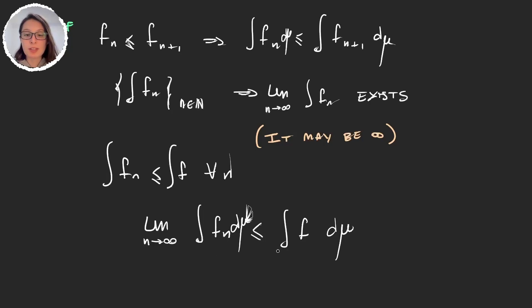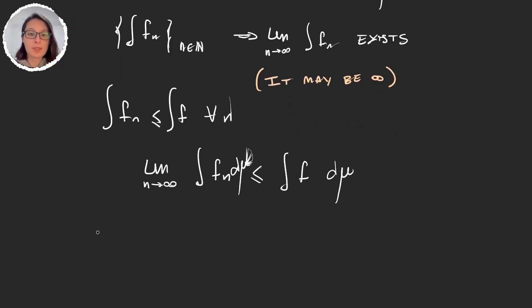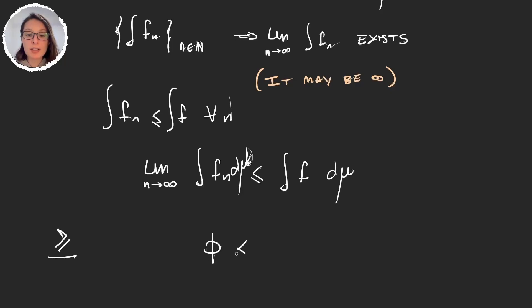Now we want to prove that the integral of f is less than or equal to the limit of all these other integrals. To do this we recall the definition of the integral of f: it is the supremum of all the integrals of simple functions below f. So we take a simple function φ that's below f, and we multiply φ by some alpha in (0, 1).